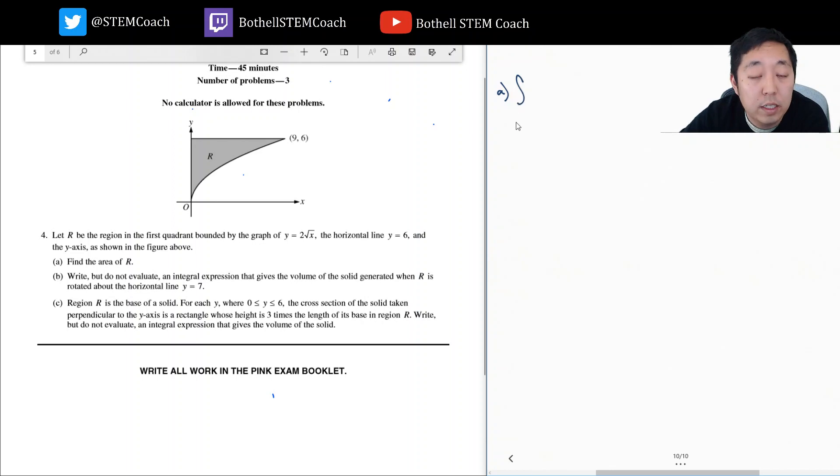The area would be the integral. I'm going to integrate over the x direction, from 0 to x equals 9. What is the height of the rectangles that I'm adding up? This is always important to think about when you're doing areas: think about the rectangle that I'm adding up. The width of this rectangle is dx.